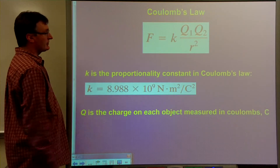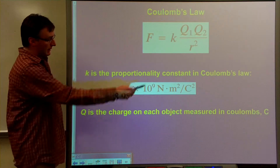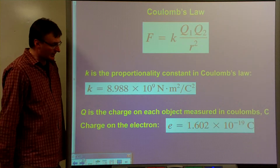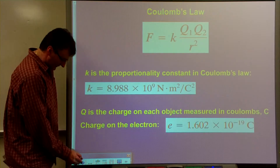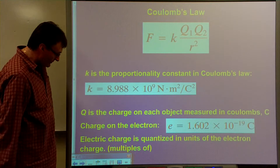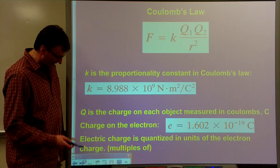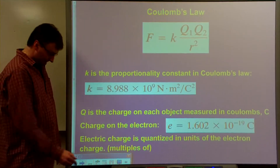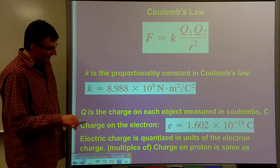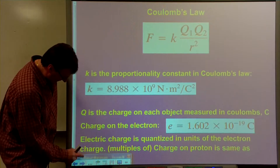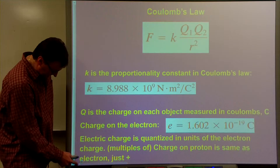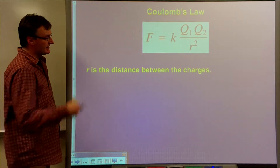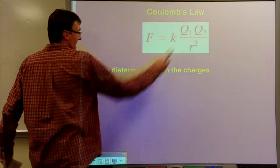q is the charge on each object, which is measured in coulombs — we use an uppercase C to represent coulombs. The charge on an electron is 1.6 times 10 to the minus 19 coulombs. The electric charge is quantized in units of the electric charge; in other words, it has to be multiples of the charge on an electron. Also note that the charge on a proton is the same — it's just simply positive instead of negative. r is the distance between the charges, and you have to remember to square that number.